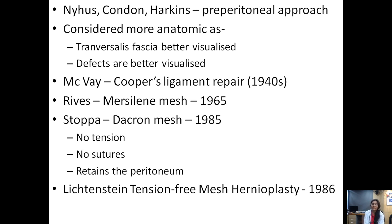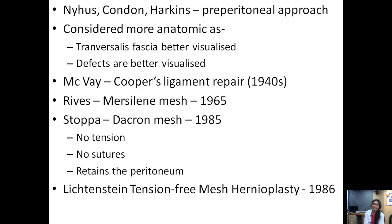McVeigh was the first to describe the Cooper's ligament repair in the 1940s. Stoppa and Rives were further proponents of the preperitoneal approach — Rives used a Mersilene mesh for preperitoneal mesh repair while Stoppa used a Dacron mesh. The advantages of preperitoneal mesh repair are no tension, as the mesh covers and anchors the entire peritoneum in situ, and no sutures are required. Lichtenstein brought forth the tension-free mesh hernioplasty in 1986.